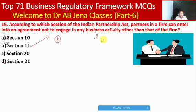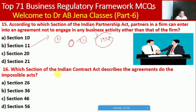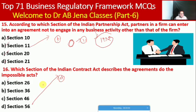Friends, you have to remember the Indian Partnership Act is 1932. Next MCQ: which section of the Indian Contract Act describes agreements to do impossible acts? Whether Section 26, 36, 46, or 56. Here D is the right option — Section 56 of the Indian Contract Act describes agreements to do impossible acts.